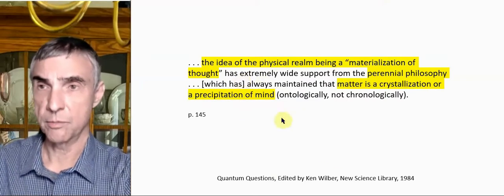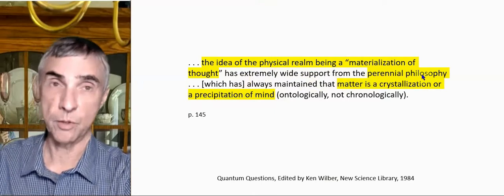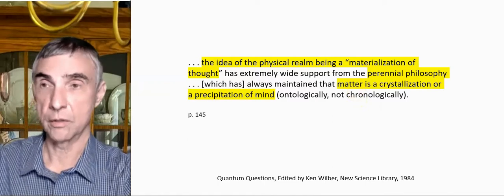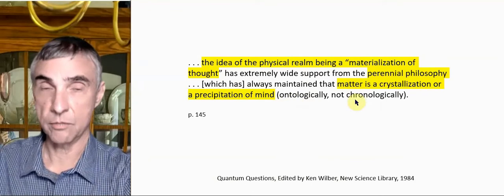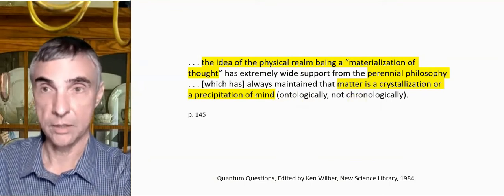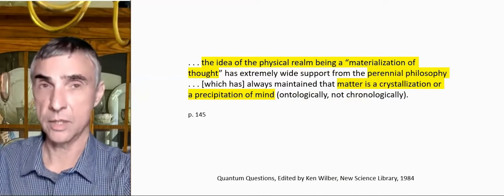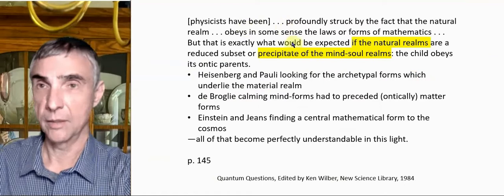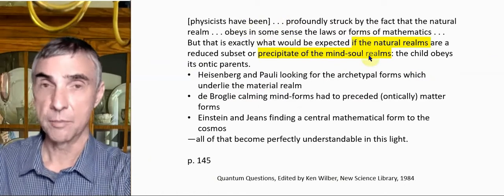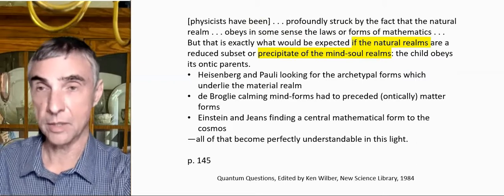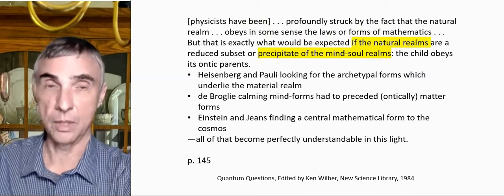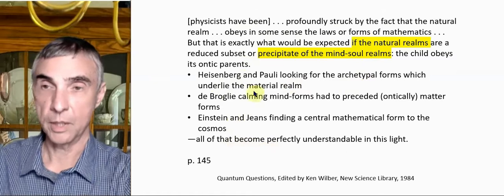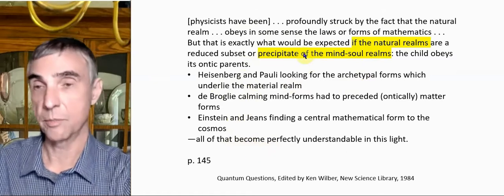The physical realm as a materialization of thought has always had extremely wide support in the perennial philosophy, which we spoke about last time. So here he's saying the view that matter is a crystallization or a precipitation of mind. And by ontologically, not chronologically, he means right at this moment. Matter is a precipitation of mind in some sense. And I know this is very vague, but as I said, I'm not getting at a solid answer in this clip. But I do want to continue. And again, physicists have been profoundly struck by the fact that the natural realm obeys the laws of mathematics. But if the natural realm is a precipitate of the mindscape, especially of mathematical thought, then that shouldn't be surprising. It should be expected.